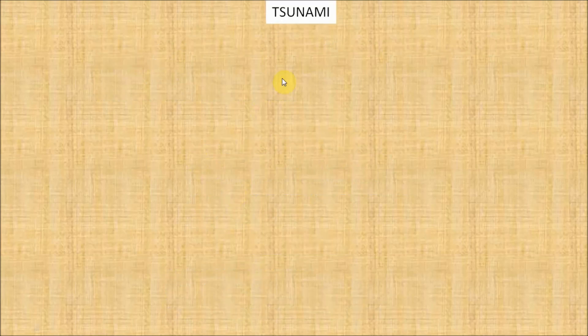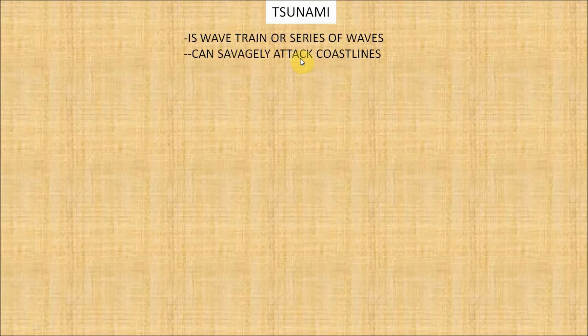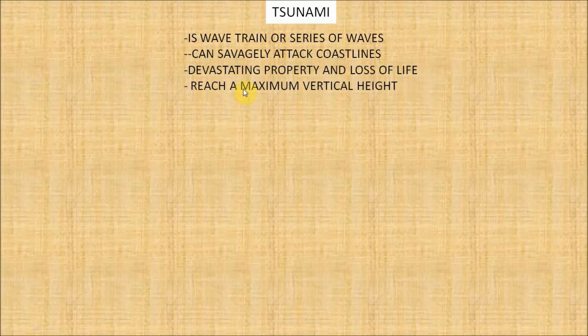Now let's learn about tsunami. Tsunami is a wave train or series of waves generated in a body of water by earthquakes, landslides or volcanic eruptions. Tsunami can savagely attack coastlines, devastating property and causing loss of life. Tsunami may reach a maximum vertical height on shore above the sea level — often called a run-up height — of 10, 20 and even 30 meters.